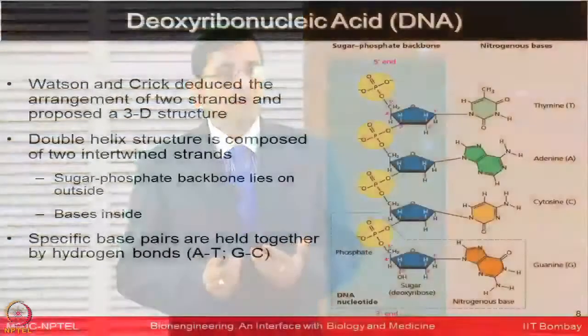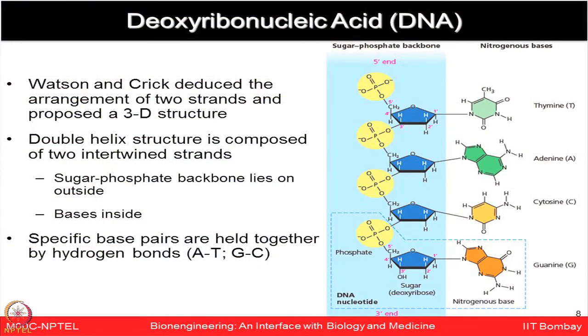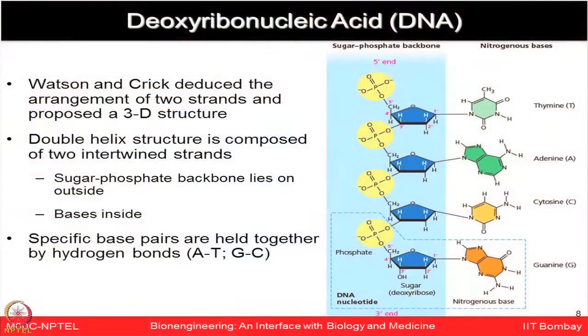Now we can easily decode the entire DNA structure: the nitrogenous bases and the sugar-phosphate backbone constitute DNA. The credit for deducing the DNA structure goes to Watson and Crick, who showed how the two strands are arranged in a helical form, intertwined, with the sugar-phosphate backbone on the outside and the bases on the inside. These base pairs specifically form hydrogen bonds between A-T and G-C.